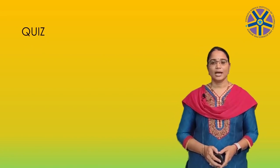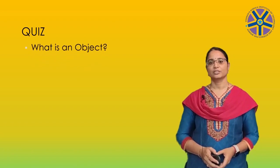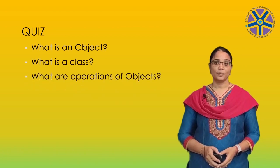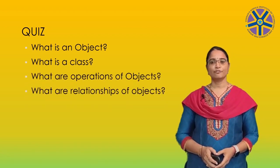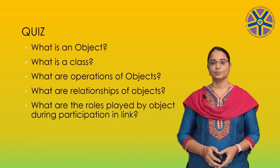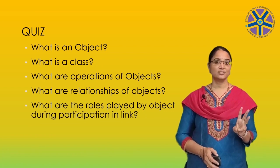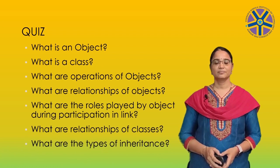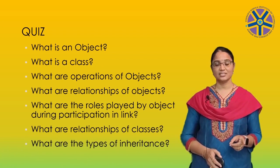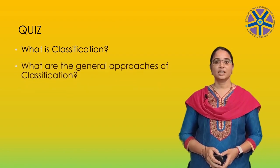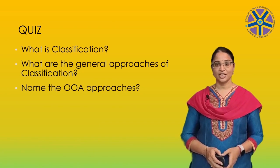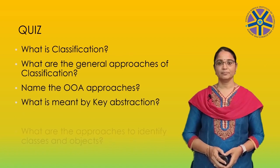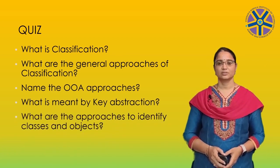Now coming to the quiz part. I have given some questions. They are: What is an object? What is a class? What are the operations of objects? What are the relationships of objects? What are the roles played by an object during participation in a link? — I told the three roles. What are the relationships of classes? What are the types of inheritance? — I told two types: single inheritance and multiple inheritance. What is classification? What are the general approaches of classification? Name the object-oriented analysis approaches — I told the six methods. What is meant by key abstraction? What are the approaches to identify classes and objects?